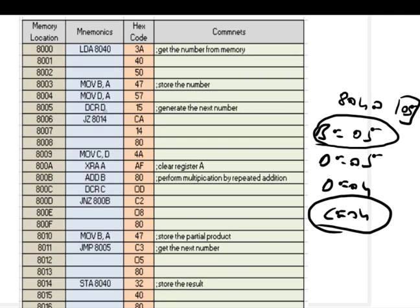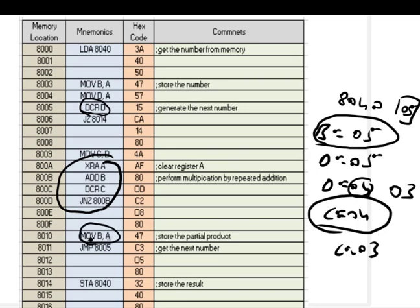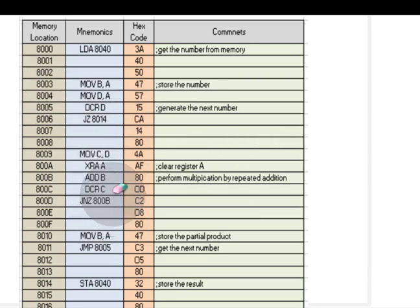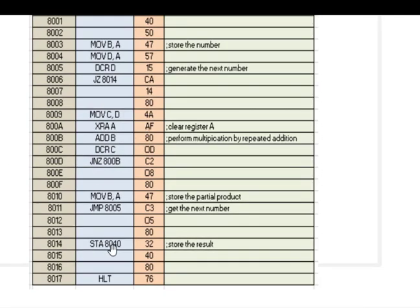After the multiplication, the result in A is stored into B with an unconditional jump back to 8005. At 8005, D is decremented again — from 04 to 03. Since D is not zero, D is transferred to C (C becomes 03), and the multiplication loop runs again, now multiplying the previous product (5×4 = 14h in B) by 3. This continues until D becomes zero, at which point we store the final result to location 8040.